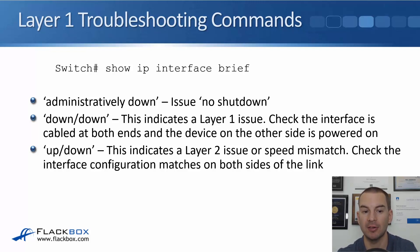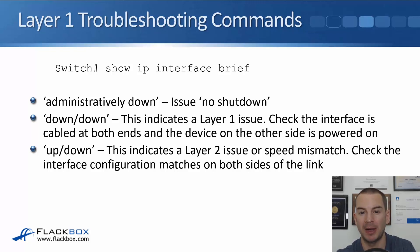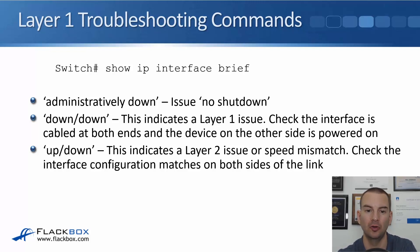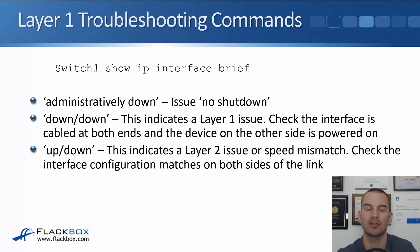The last status you can have in show IP interface brief is up/down. That typically indicates a layer 2 issue or a speed mismatch. In this case, check that the interface configuration is the same on both sides of the link. A common issue would be different VLAN settings on both sides of the link — we'll talk about that more when we get to the VLAN section.